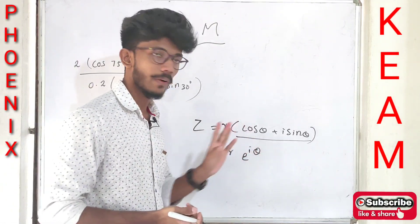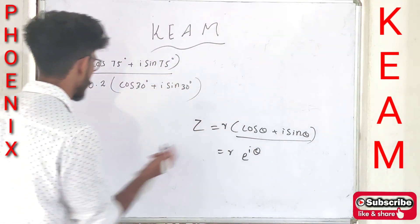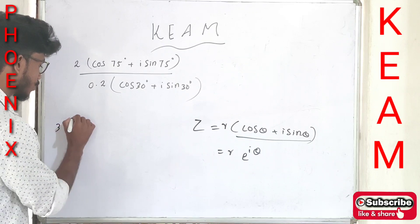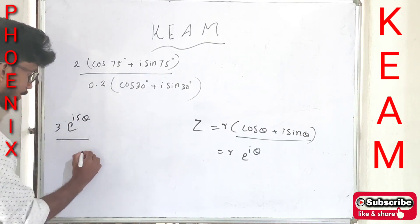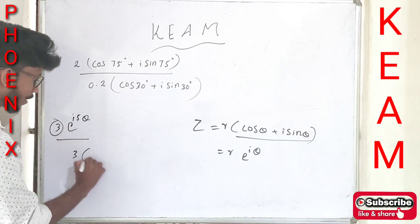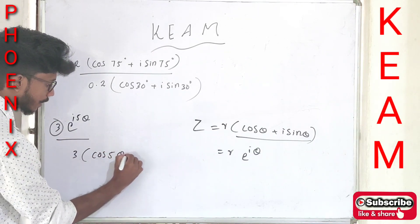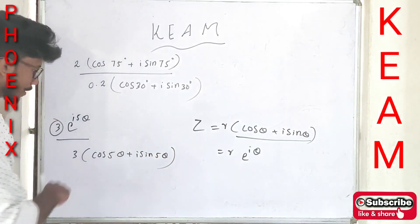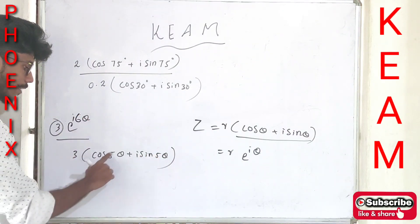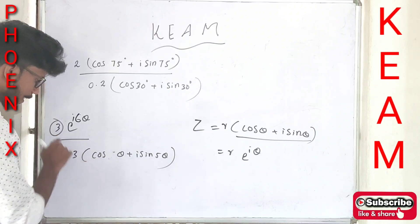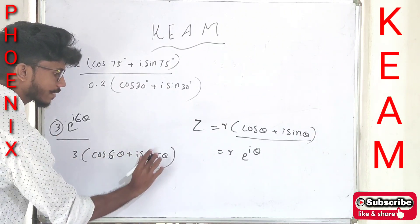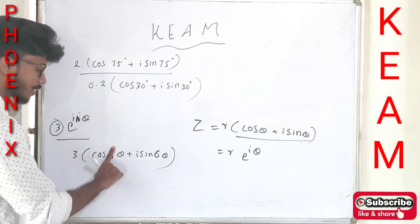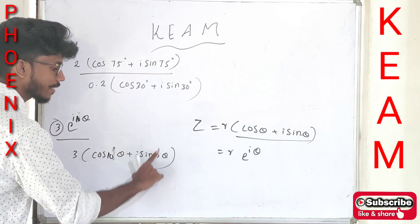For example, e^(iθ) and e^(i5θ) relate to 3(cos θ + i·sin θ). If we write cos θ + i·sin θ, we get cos θ + i·sin θ in exponential form.